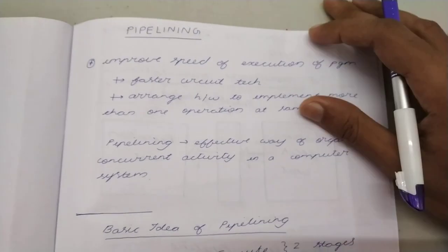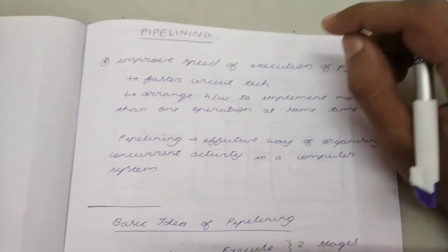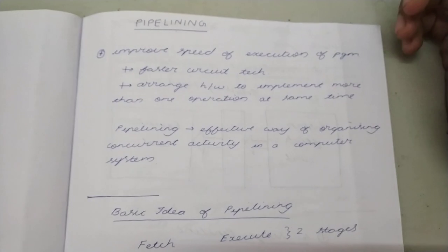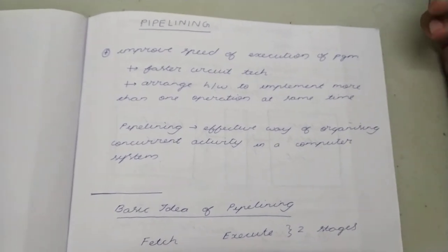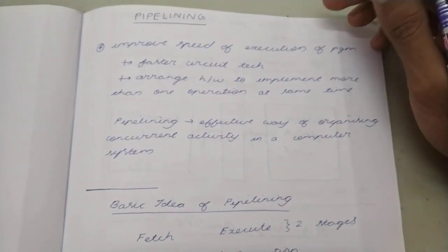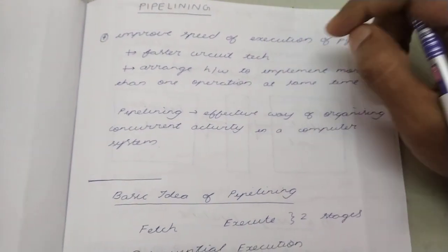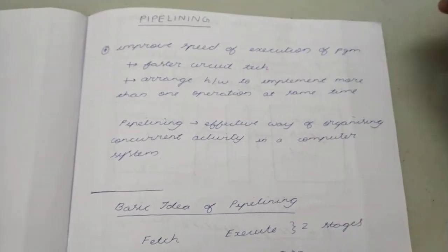Hello friends. The topic we have at hand is pipelining. So what is pipelining used for? Basically, it is just used to improve the speed of execution of a program.